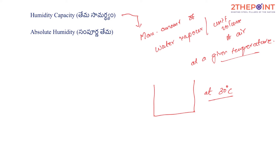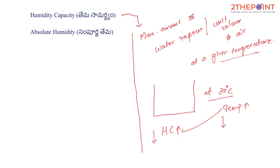At higher temperatures, the humidity capacity increases — the ability to hold water vapor increases. At lower temperatures, the ability to hold moisture or water vapor decreases. So humidity capacity is the grams of water vapor that a unit volume of air could hold at a given temperature.